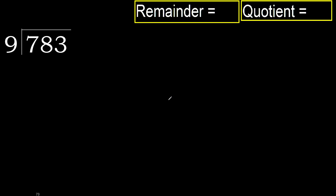783 divided by 9. 7 is less, therefore next. 78 is not less, therefore with 78.